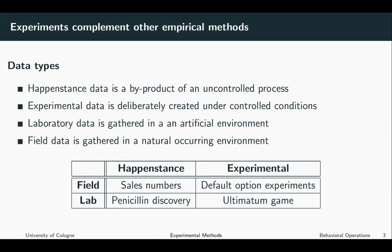I want to give you an example for all combinations. For example, there's happenstance field data. If you receive sales numbers, this is typically happenstance field data — you make an observation in the field, but it's not in a controlled environment.